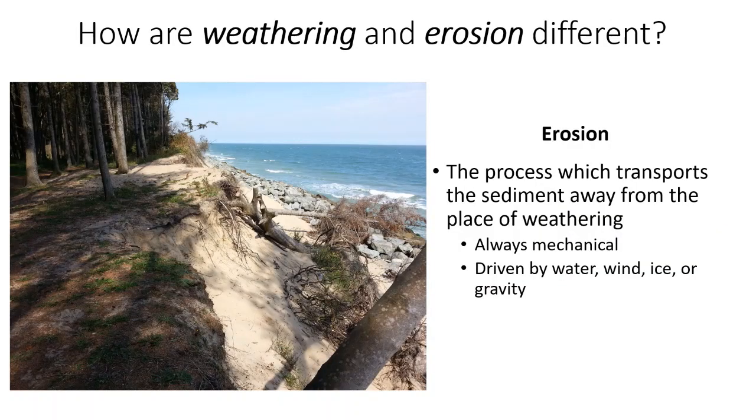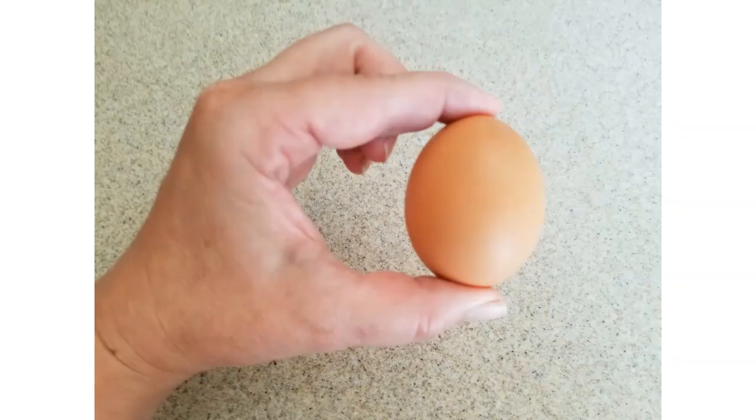Erosion is the process which transports the sediment or broken pieces of rock to a new location. Erosion is always mechanical. In other words, the sediment is being transported by water, wind, ice, or gravity. As our rock travels along, it will be broken into smaller and smaller pieces. From the size of your fist to the size of an egg, to the size of a pea, to the size of a grain of rice or smaller, our rock has turned into a piece of sand along its erosional journey.